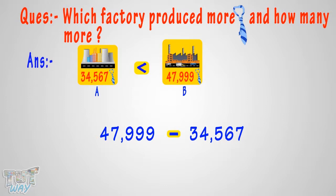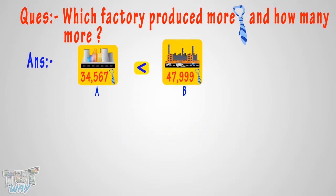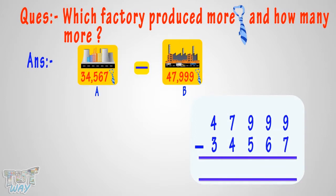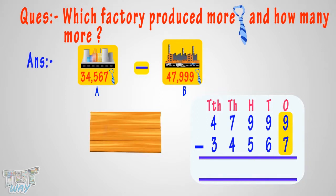As we know, we will write the bigger number first and every digit must be below its place. 9 minus 7 equals 2. Write 2 in difference at 1's place. 9 minus 6 equals 3. Write 3 in difference at 10's place.